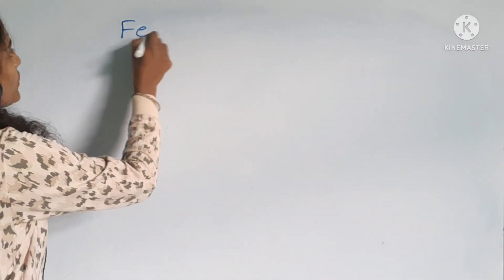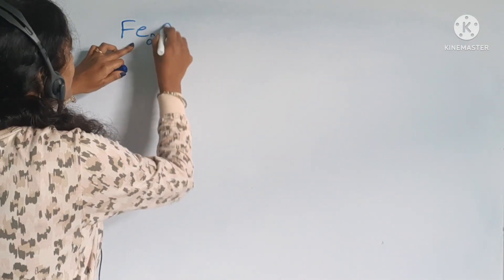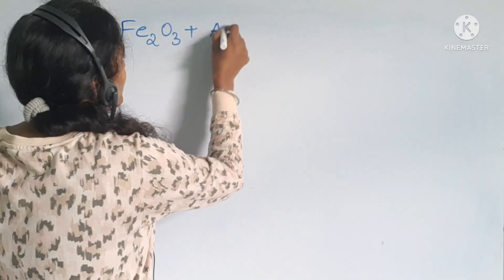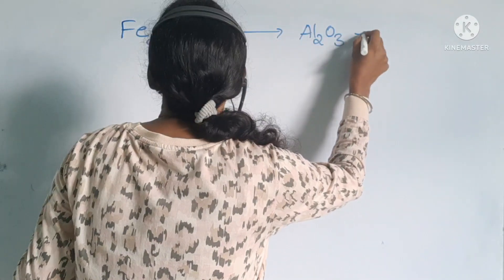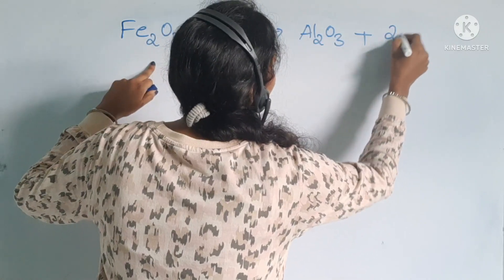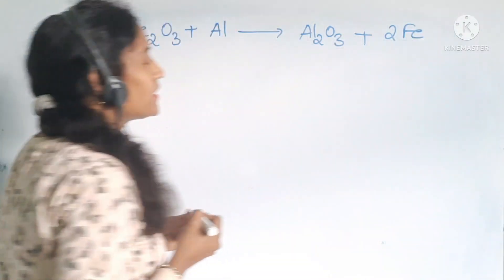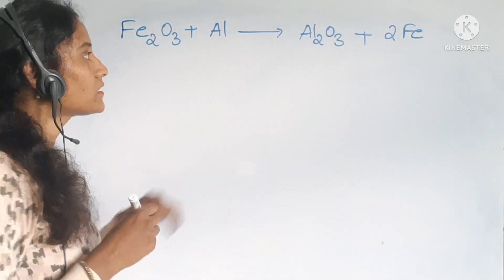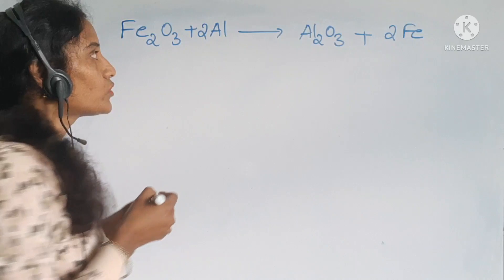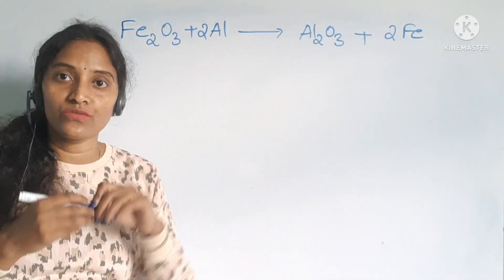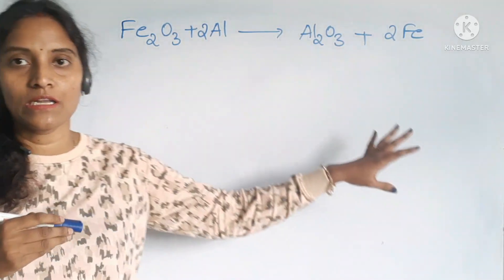By taking one example, we can discuss that information. Fe2O3 reacting with aluminum will form Al2O3 plus iron gets separated. This is the displacement reaction. It is not a balanced chemical equation. To balance it, you can add coefficient 2 to the aluminum from reactant side. Now it has become completely balanced.